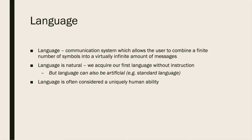Language is also natural. We acquire our first language without being explicitly instructed in it. For those who have studied a foreign language, this is a very different process from the way languages after our first tend to be taught in formal instructional settings. The language we learn as an infant is our first language, and that's a natural language. Other languages learned later in life are also natural languages. But language could also be artificial — one form is a computer programming language, another is a constrained language like simplified English, some sort of artificially standardized human language.